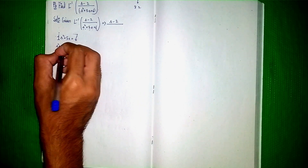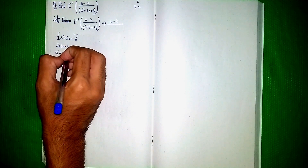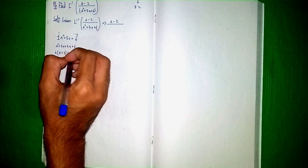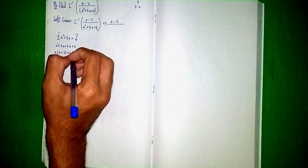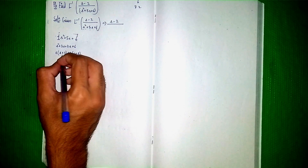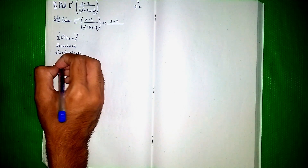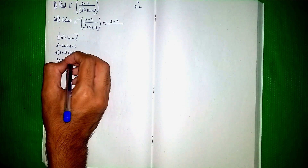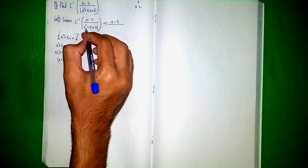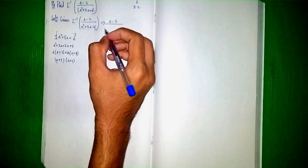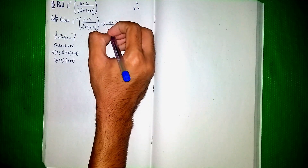Taking s common: s(s plus 3), then plus 2(s plus 3). So (s plus 3) comes outside, giving us (s plus 3)(s plus 2). So our factoring is correct. Instead of s squared plus 5s plus 6, we write (s plus 3)(s plus 2) to solve this question by the partial fraction method.